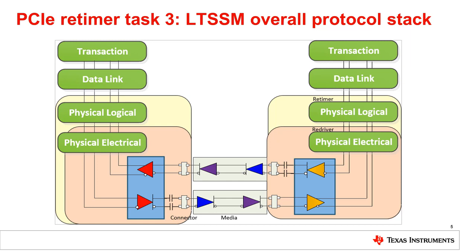In the PCIe topology, the root complex implements a software stack. The PCIe software stack follows ISO software layers. There is the transaction layer, the data link layer, and the physical logical and physical electrical layers. PCIe communication, similarly to ethernet, is encapsulated in packets. Packetization, depacketing, and traffic monitoring is done by the transaction layer. The data link layer works to assure integrity of the transaction layer packets.